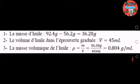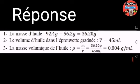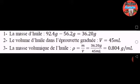Réponse. 1. La masse d'huile : 92,4 grammes moins 56,2 grammes égale 36,20 grammes. 2. Le volume d'huile dans l'éprouvette graduée : V égale 45 millilitres. 3. La masse volumique de l'huile : ρ égale M sur V égale 36,20 grammes sur 45 millilitres égale 0,804 grammes par millilitre.